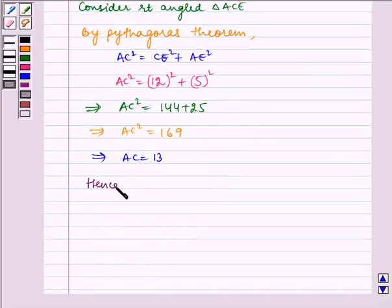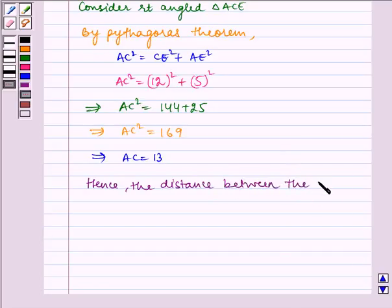Hence, the distance between the tops of the two poles is 13m.